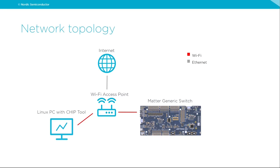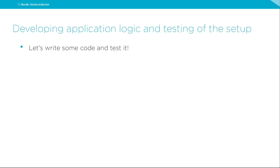Let's have a quick overview of our network topology. It's going to be quite simple — we need a Wi-Fi router or access point with internet connection and a Linux PC with chip tool installed, which is the Matter controller implementation already used during today's webinar. Our application will run on one of our recent development kits, the NRF7002 DK, which includes the host processor NRF53 and as a companion chip also includes our recent SoC, the NRF7002.